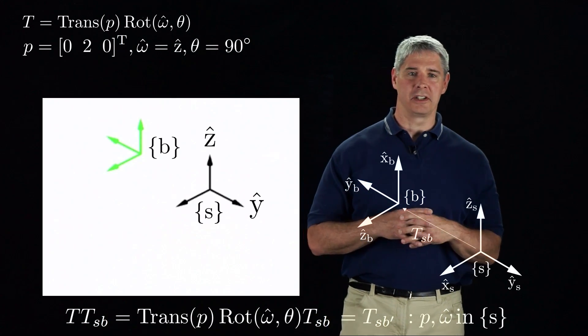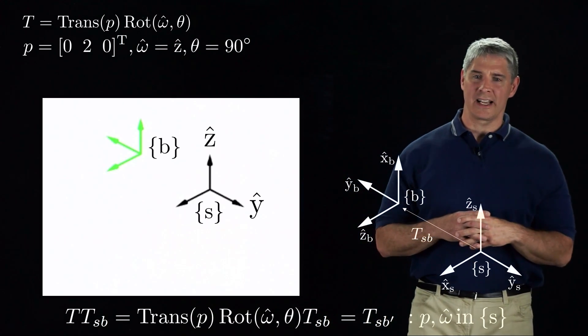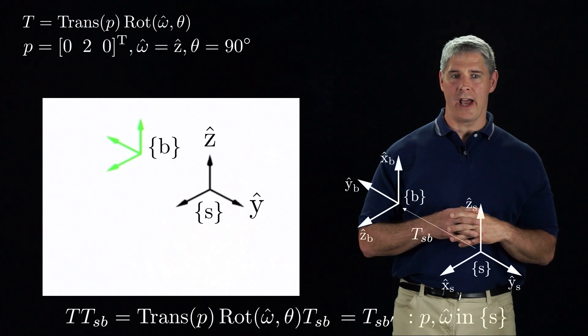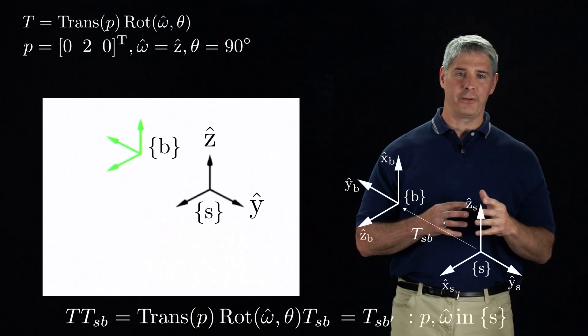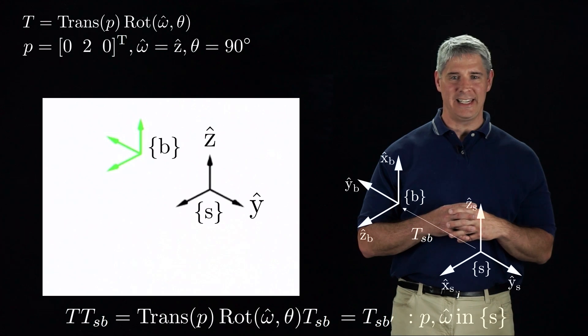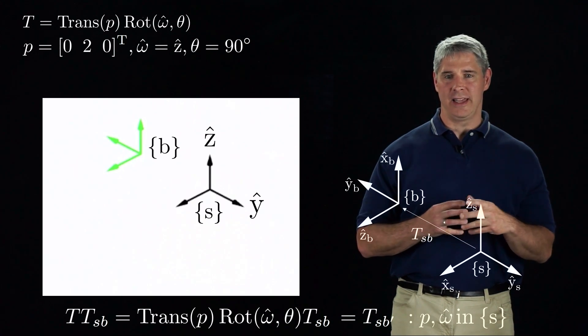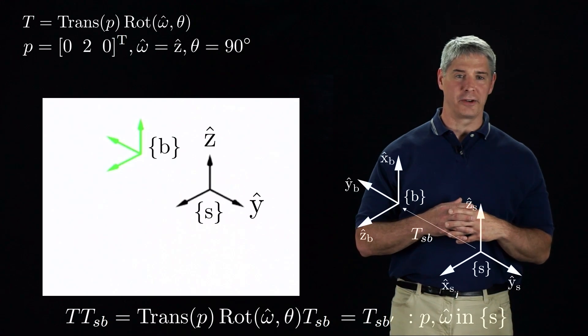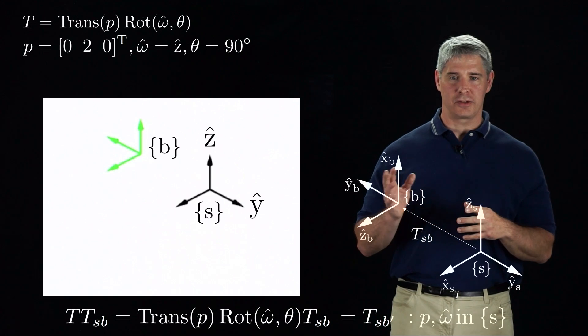Let's animate the transformation T. The rotation axis Z and the translation axis Y, expressed in the S-frame, are shown. First, the B-frame will rotate 90 degrees about the z-axis of the S-frame, and then it will translate two units along the y-direction of the S-frame. Let's run the animation.